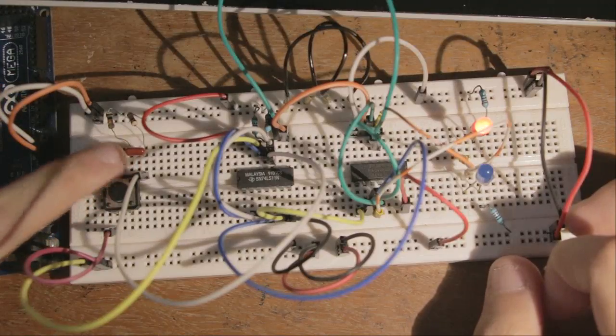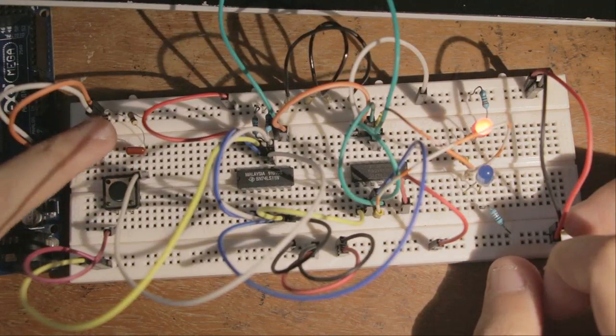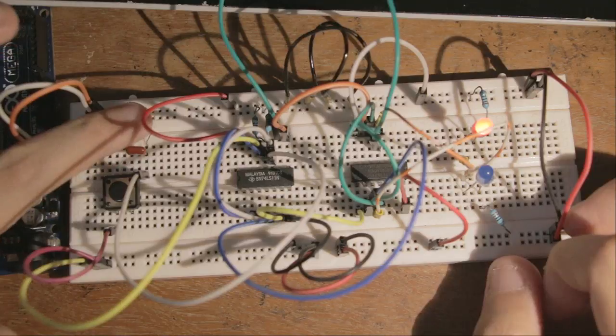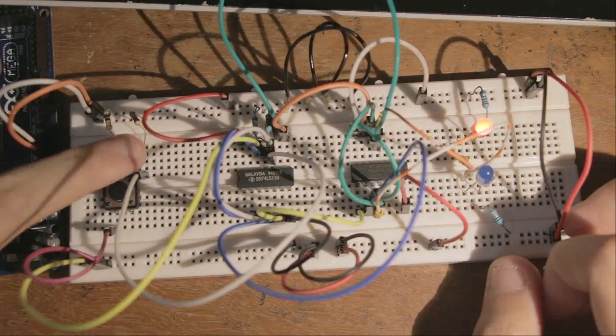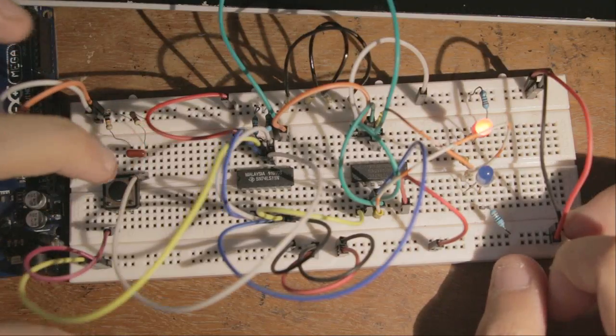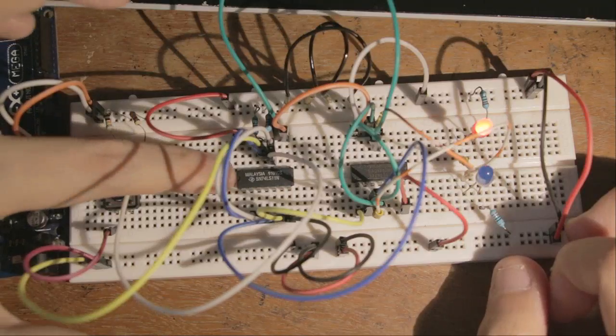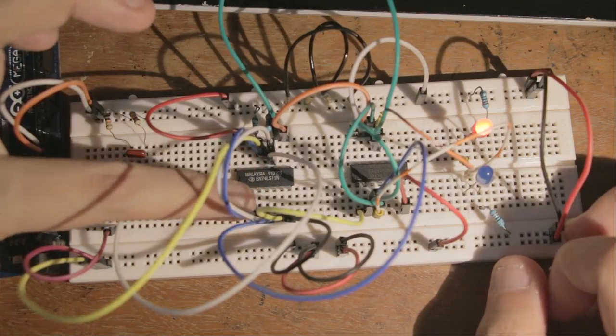So the switch is being pulled down to ground via this resistor, and this resistor basically allows our capacitor to discharge. This input is being fed into one pin on each AND gate.